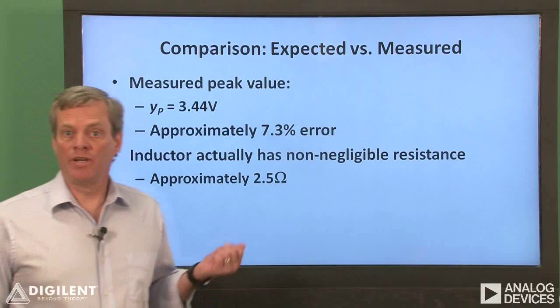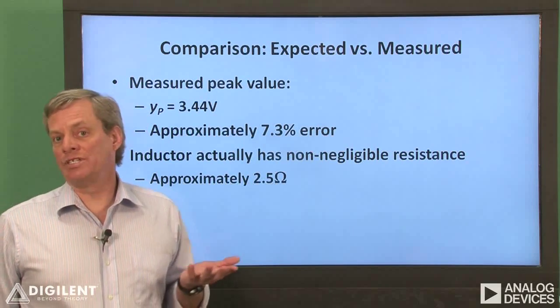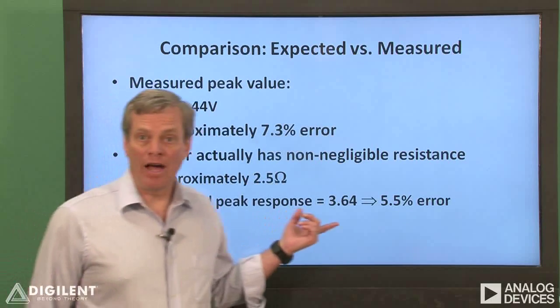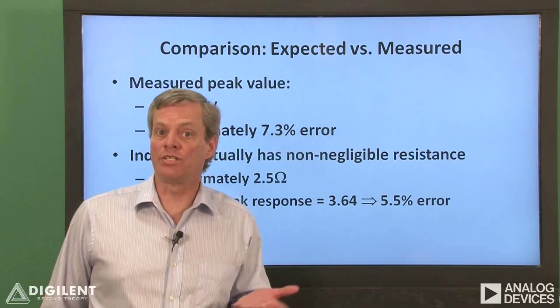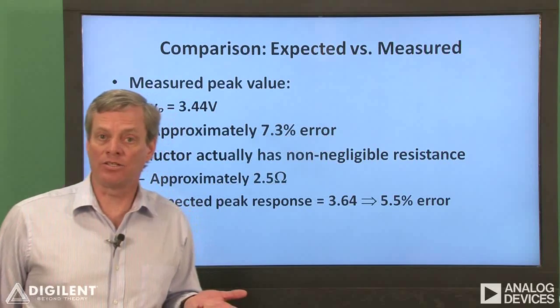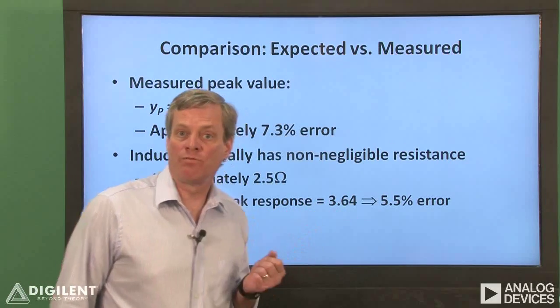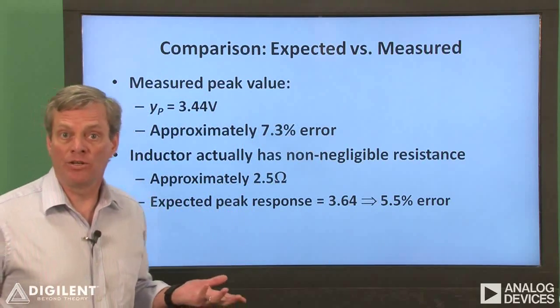When I used an ohmmeter to measure the resistance of the inductor, I got about 2.5 ohms, which is significant compared to the 10 ohm resistor we're using. If I include this 2.5 ohms in my calculations, adding it in series, consistent with our previous non-ideal inductor model, I get an expected response of 3.64 volts, which gives us an error of only 5.5 percent, which is very good agreement.